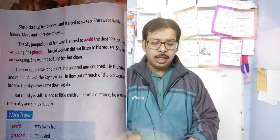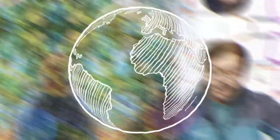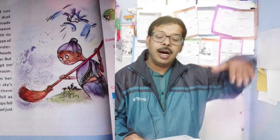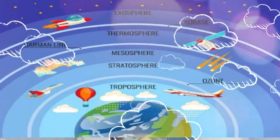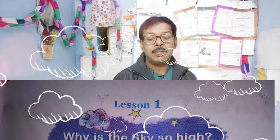She picked up her broom and started sweeping again — hard and harder. More and more dust flew up. The sky jumped out of her way, trying to avoid the dust. 'Please stop sweeping,' the sky pleaded. 'I am a friend of the children — don't drive me away.' But the old woman did not listen. She kept sweeping; the sky flew up out of reach of her broom and never came down again. But the sky is still a friend to little children from a distance — watching their play and smiling happily.